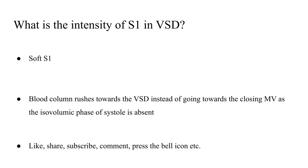Finally, what is the intensity of the first heart sound in cases of ventricular septal defect? The S1 would be soft, and the concept is similar to chronic mitral regurgitation — there is a loss of the isovolumic phase of systole in VSD as well, because VSD is a communication between the left and right ventricle. The blood column rushes toward the ventricular septal defect instead of toward the closing mitral valve, so the deceleration of the blood column against the closing mitral valve is not seen, contributing to a soft first heart sound.